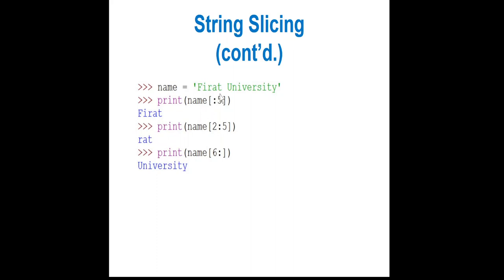You can also slice from the end using negative values. If you specify a negative index like minus 5, it counts from the end backward: minus one, minus two, minus three, minus four, minus five. So placing minus 5 as the start will display the last 5 characters of the string. This is exactly similar to negative indexing in lists.